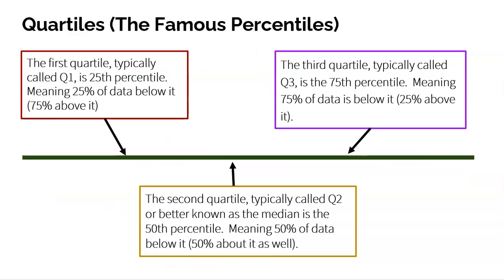This is where our quartiles come into place. We have our minimum all the way at the bottom, our maximum all the way at the top. The value in the middle is the median, known as the second quartile. The second quartile is a very special percentile — it is the 50th percentile. Because if you're the median, right in the middle, 50% of data is below and 50% is above. Then we have Q1.